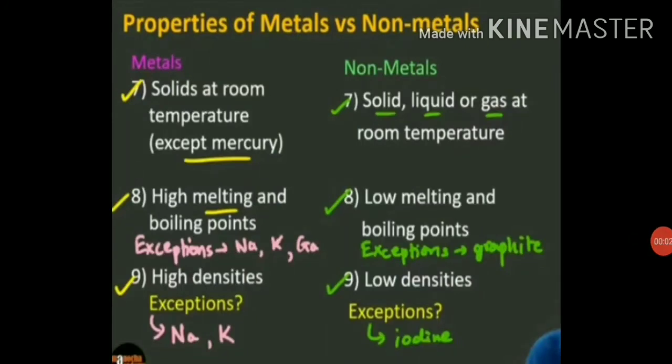Let's talk about the physical state of metals and non-metals. Most metals are solid at room temperature. Mercury is the only metal known to occur in liquid state in nature. No metal exists in gaseous state. Non-metals are generally solids or gases. Non-metals like sulfur, phosphorus and carbon are solids, while hydrogen, oxygen and nitrogen are gases. Bromine is the only non-metal which exists as a liquid at room temperature.